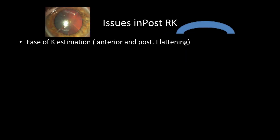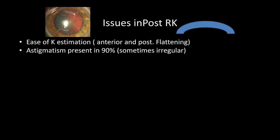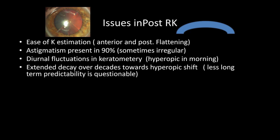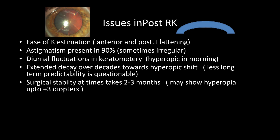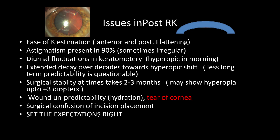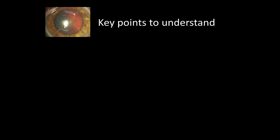Whereas post RK, the flattening is generalized — both the anterior and posterior surfaces are flattened. This makes estimation easier, especially in post RK cases. But one big issue with post RK cases is that there is an irregular astigmatism which can be very difficult to treat. Also, the possibility of corneal tear during cataract surgery and stability of refraction even after surgery may take two to three months.